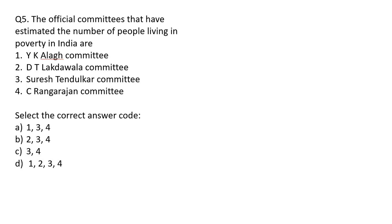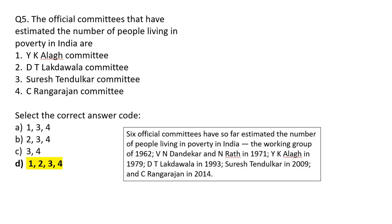Question number 5: The official committees that have estimated the number of people living in poverty in India are — YK Alagh committee, DT Lakdawala committee, Suresh Tendulkar committee, or C. Rangarajan committee. This question has been taken from the NCERT of class 9th economics. The correct answer is D — all of the above. YK Alagh committee was formed in 1979, DT Lakdawala committee in 1993, Suresh Tendulkar committee in 2009, and C. Rangarajan in 2014. There were 6 official committees in total.